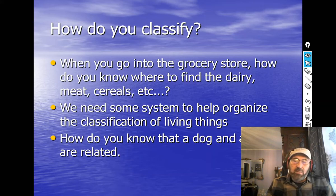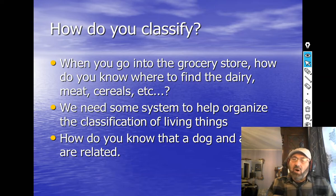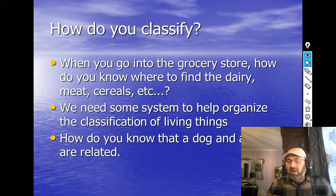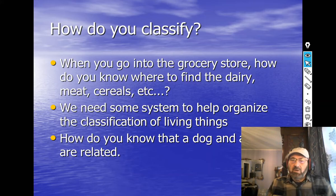We need a classification system to help us understand relationships. You know that a dog and a wolf are closely related because they have similar characteristics. Is a dog and a wolf more closely related, or a dog and a giraffe? The dog and wolf, right. Is a dog and a giraffe or a dog and a frog more closely related? The dog and the giraffe — but a dog and a frog are more closely related than a dog and a sea star.